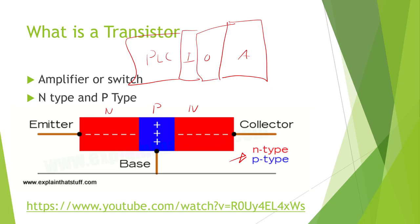The fountain outside our career programs building had a relay on an output that went bad. In theory, you just move the output to another relay, download the code, and you're done. Except the company we bought the fountain from had blocked the software, so we couldn't access it. I ended up putting a whole new PLC in there with my own code.